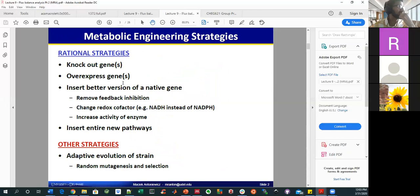So in terms of these rational strategies I just mentioned, knocking out genes, really common one, overexpressing genes. And the metabolic modeling community tends to spend more time thinking about these, just because they have a really good understanding of what an organism already does.